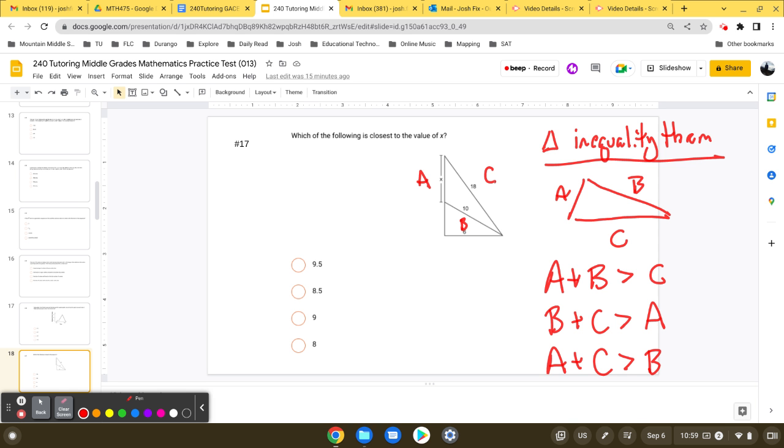So if A was 8, let's start with the lowest. So if I did 8 plus 10, is that greater than 18? And the answer is no. So 8 could not be a value of X because it doesn't meet the first requirement.